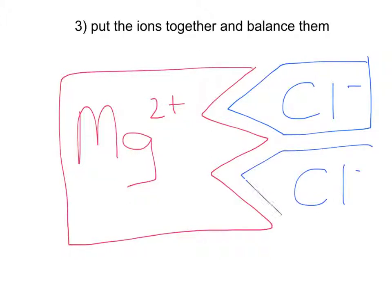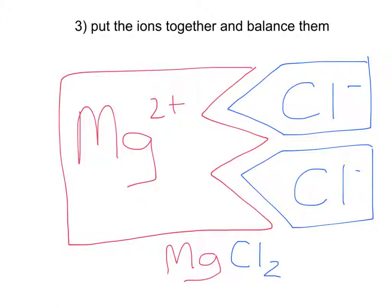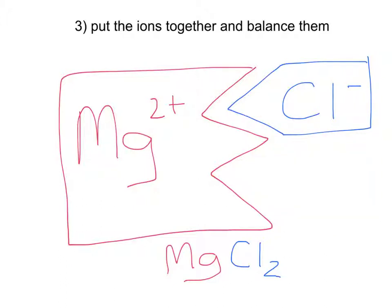We need to add another chloride ion, and that makes a nicely balanced compound — both electrons have been shared between the two ions. Writing that formula down: one magnesium gives us Mg, and we have two chloride ions so we write Cl with a subscript 2, giving MgCl₂. Note that when writing charges they go at the top right (e.g. Mg²⁺, Cl⁻), but when balancing the formula the numbers always go as subscripts at the bottom.